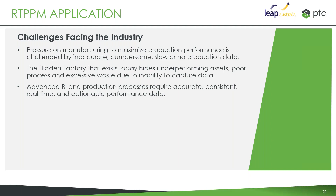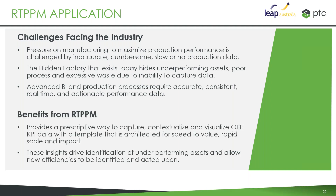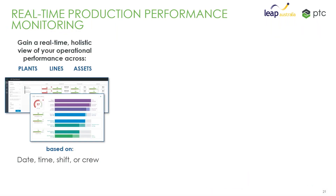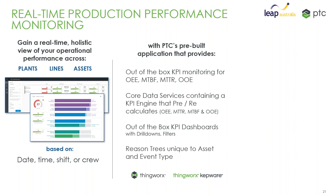The idea is to give us tools to help monitor and understand that in real time, presenting us with actionable data. It really gives us a way to capture, understand, and visualize our OEE KPI data with a template that's ready out of the box to roll out across all of our production equipment. This lets you understand what's happening on the floor and how you can act upon it. The goal is to gain a real-time view of your operational performance across your plants, lines, and assets — filtered by date, time, shift, or crew.